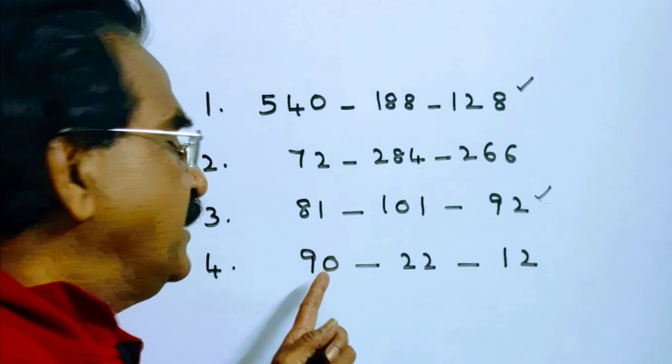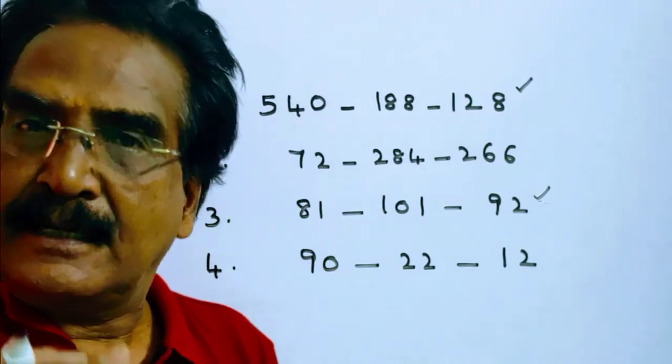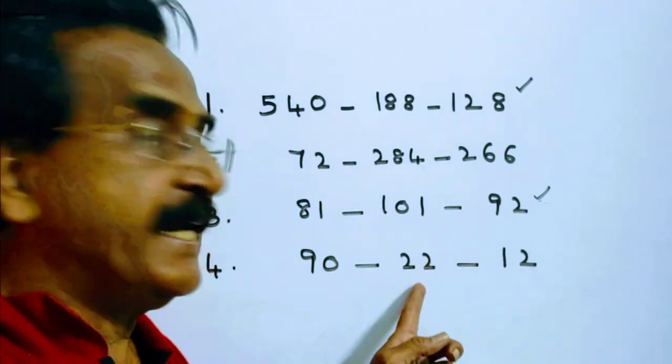If you take this one, 90 divided by 9 equals 10. 10 plus 12 equals 22.